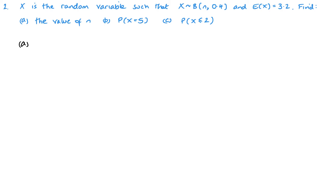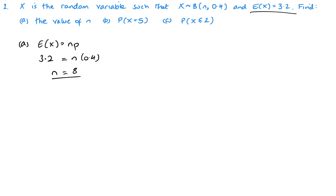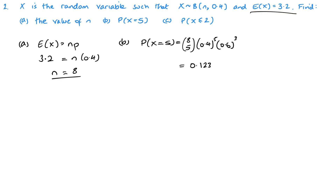Part a is fairly straightforward: we know E(X) = np and E(X) = 3.2. We don't know n but we know p = 0.4, so we divide 3.2 by 0.4 and get n = 8. For P(X = 5), using the formula: 8C5 times 0.4 to the power 5 times 0.6 to the power 3, which gives 0.1239.